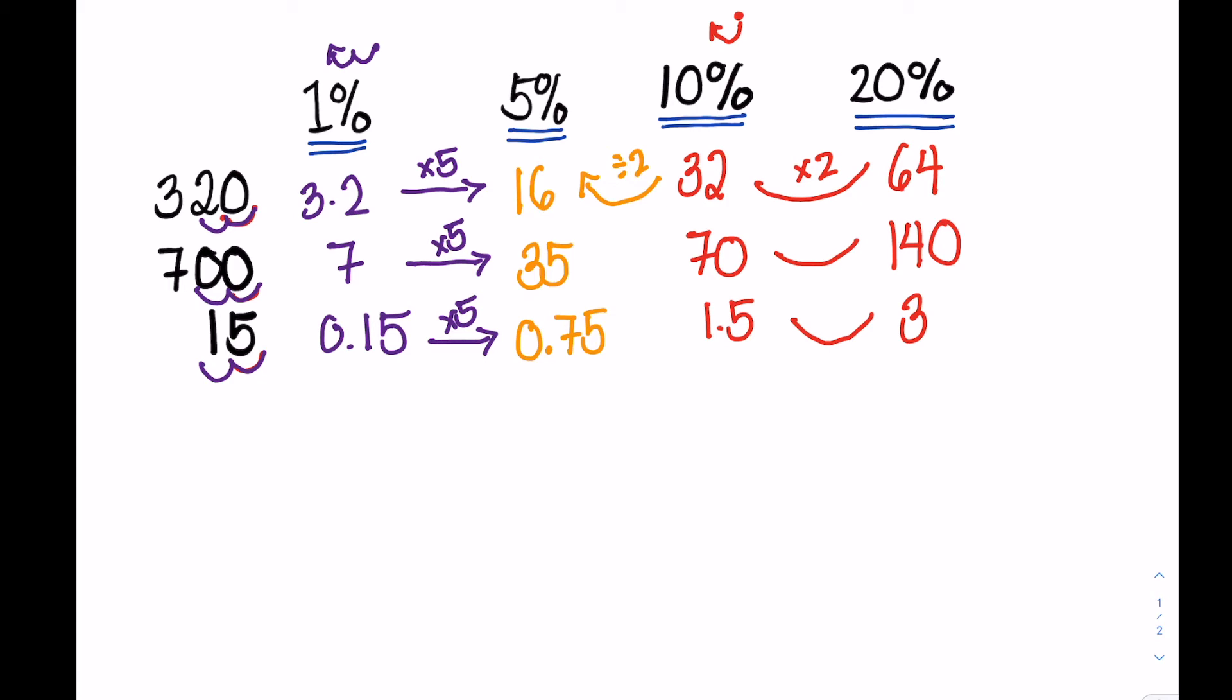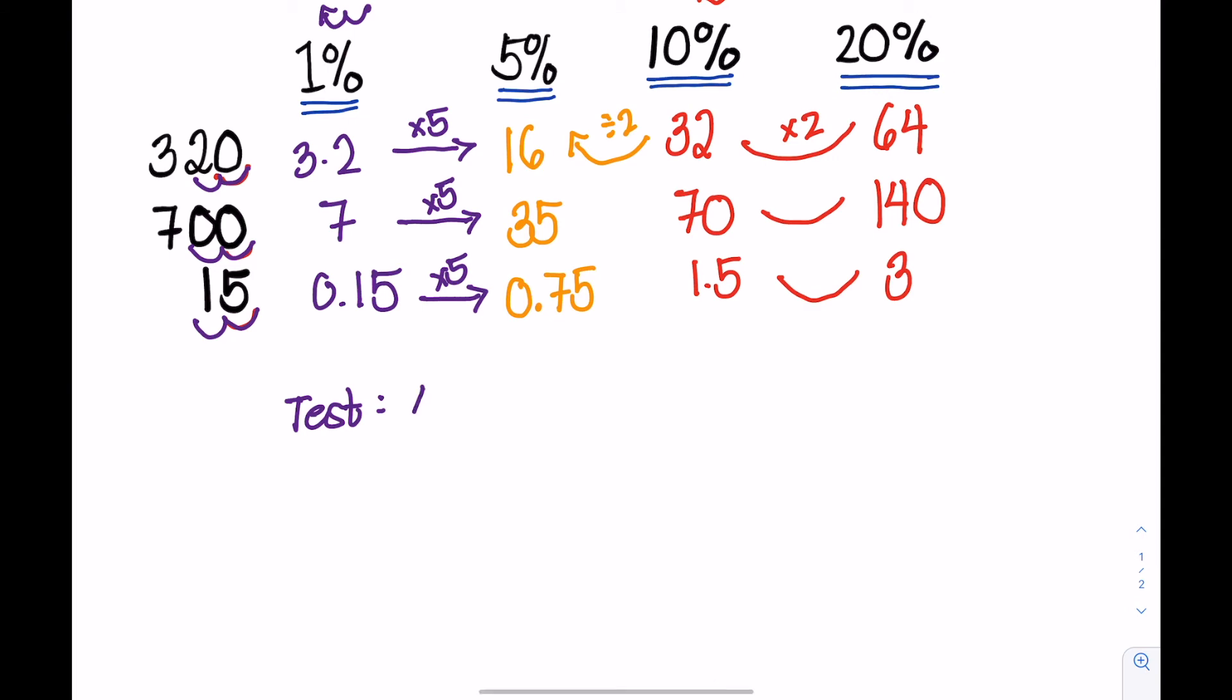Now let's have another example. Let's test 400. The 10% of 400, move the decimal point once, we have 40.